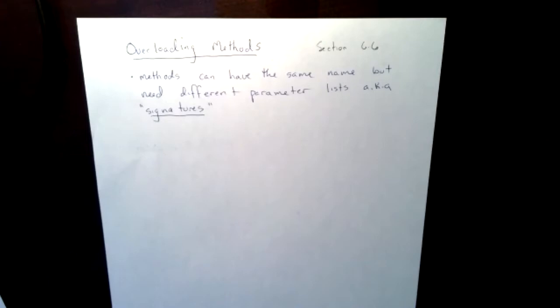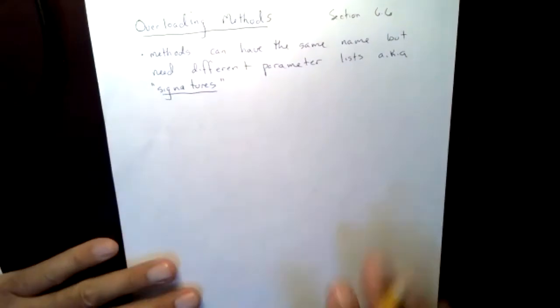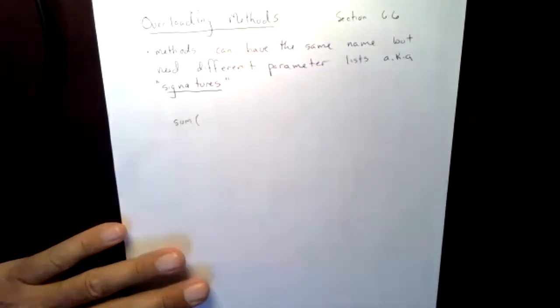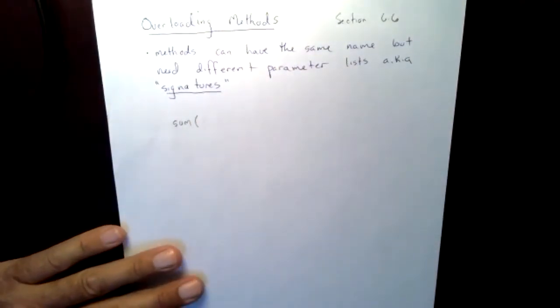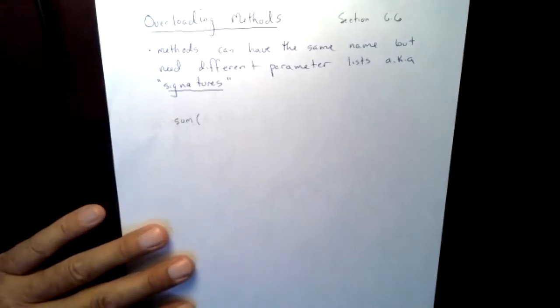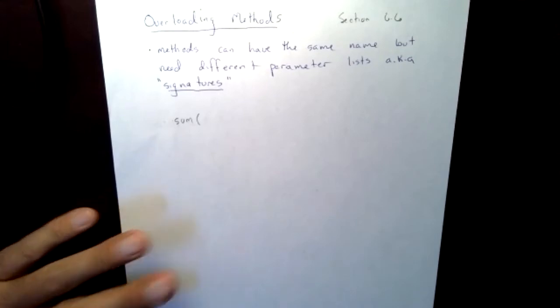Overloading a method. Methods can have the same name, just like we talked about with the constructor, but different parameter lists, also known as signatures, which is what we had talked about with the constructors. So if I was to come up with just a couple examples, I may have a method called sum. And as soon as you see sum, what do you know I'm going to do? I'm going to probably have how many parameters in this method? Two.